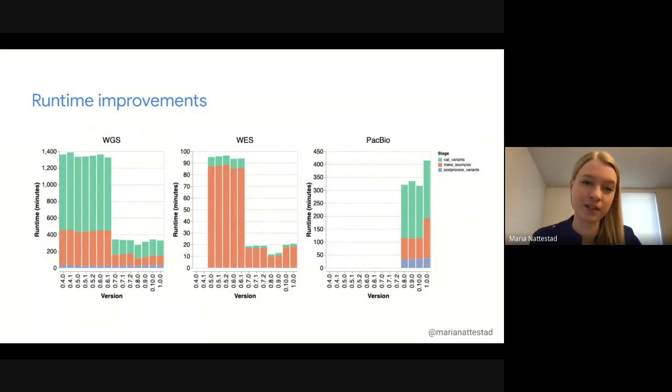I wanted to show runtime as well because we had a huge speedup, especially in version 0.7, due to changes in both call variants and in make examples. Call variants is where you do the classification stage using the neural network. In make examples, it's about preparing those pileup images. If you're using a version before 0.7, you could get a nice speedup and make your run less expensive by upgrading to at least version 0.7. We'd recommend, of course, using version 1.0.